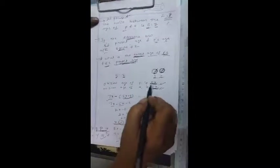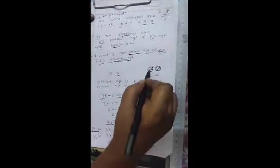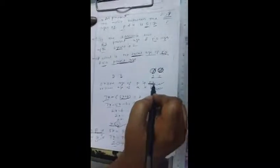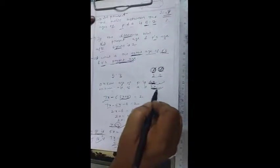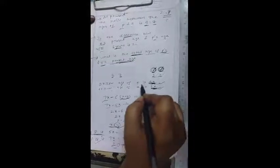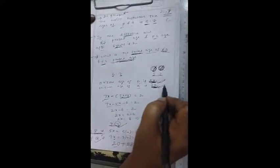So let the original age of P is 5x. Means something multiplied by 5 is the original age. And similarly, original age of Q is 7x. So let the original age of P is 5x and original age of Q is 7x.